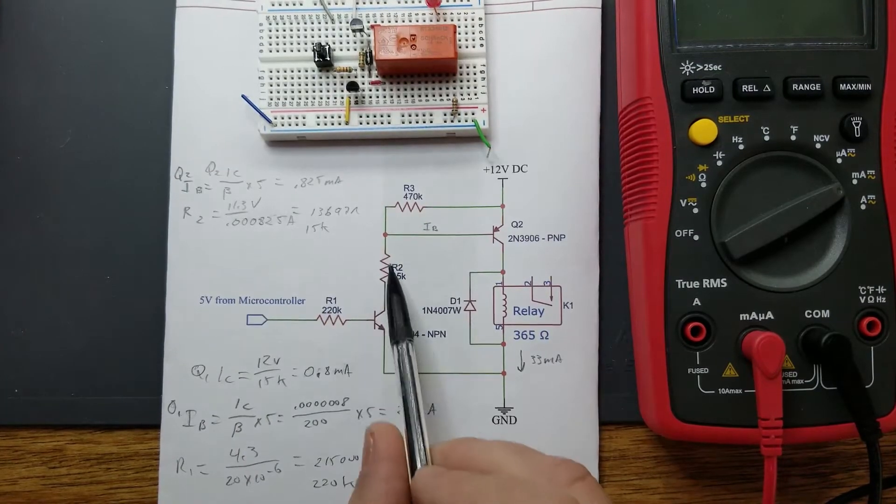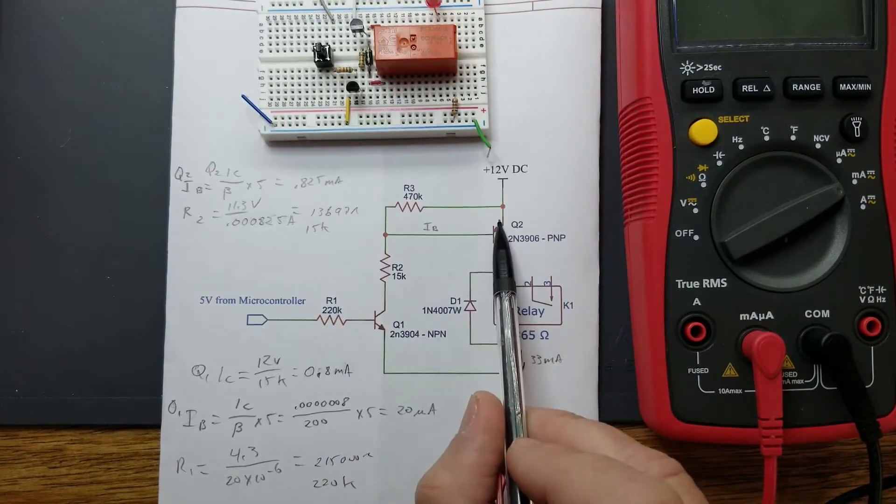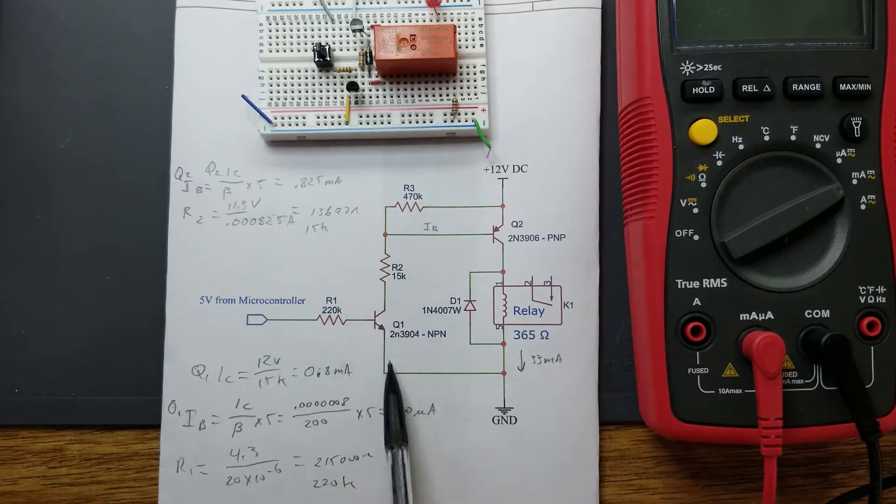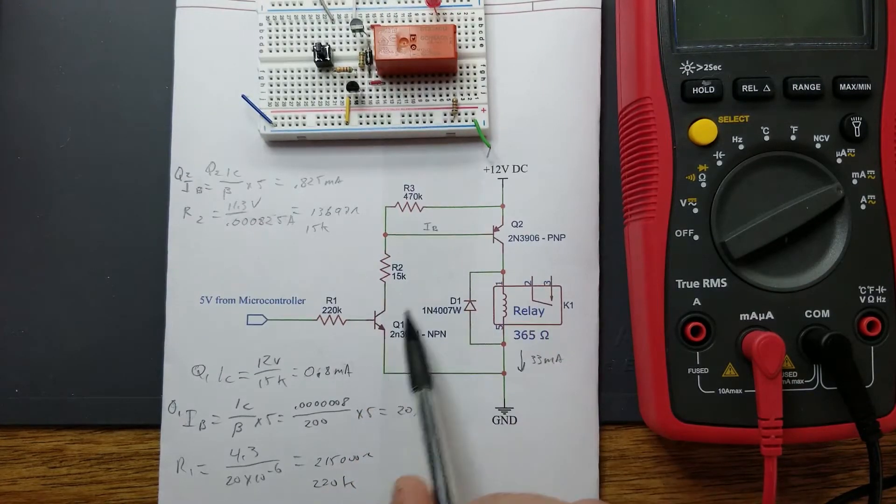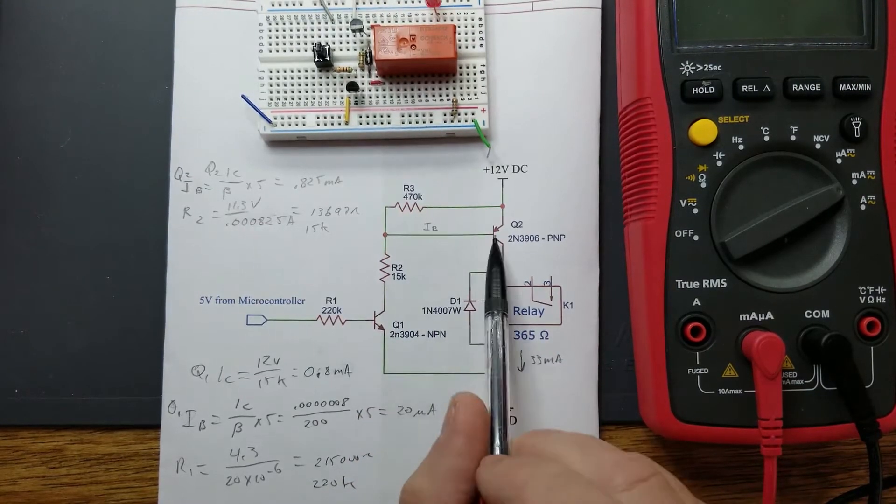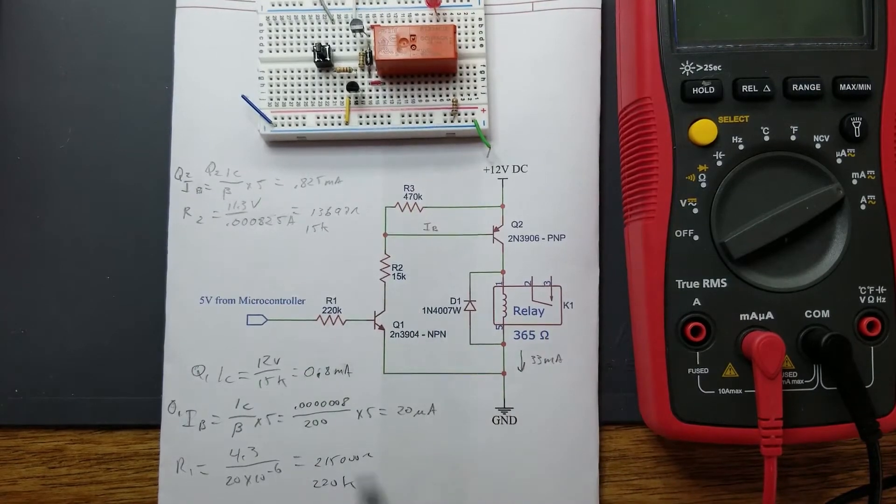Essentially what happens is when this goes high, the microcontroller just turns this transistor on, pulls this low, and allows current to flow through here and turns both these transistors on. These transistors are used in their saturation mode, which they should be for a transistor switch.